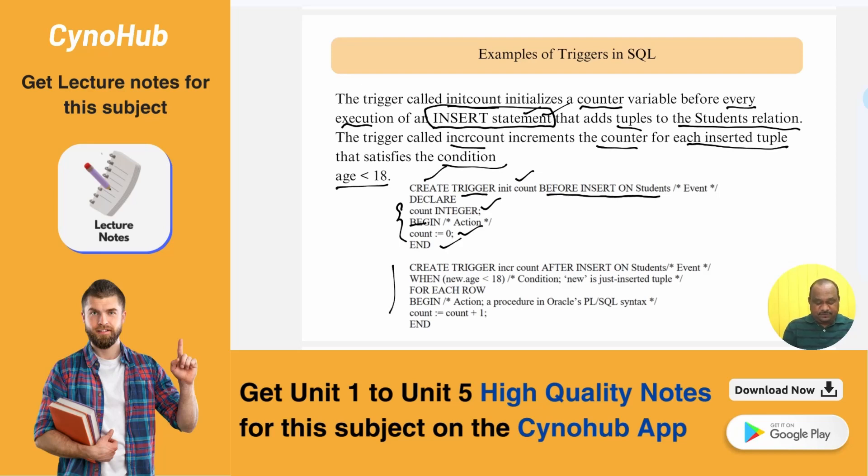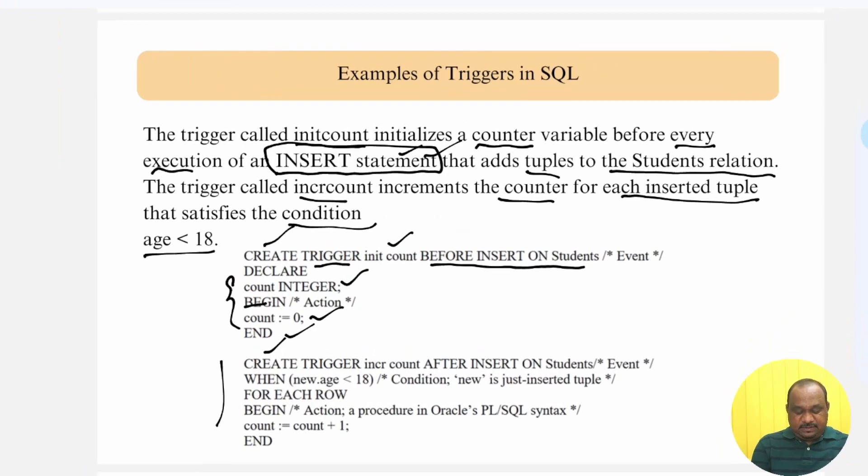Coming to the next one, continuation of create trigger name, after inserting of the statement, then when the age is less than 18. This shows the condition.